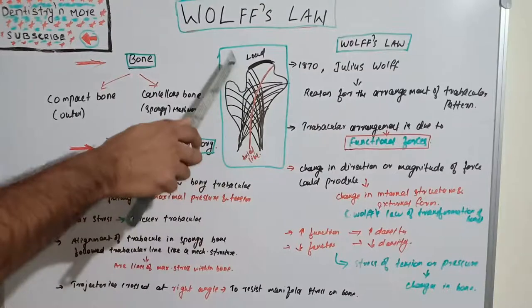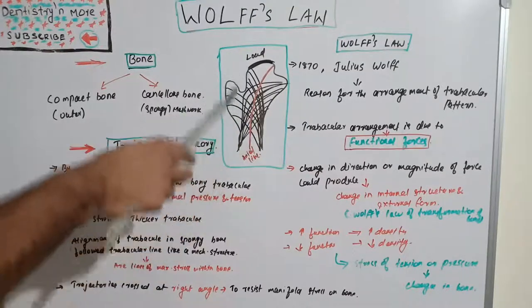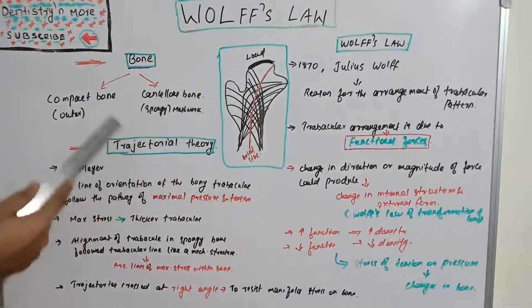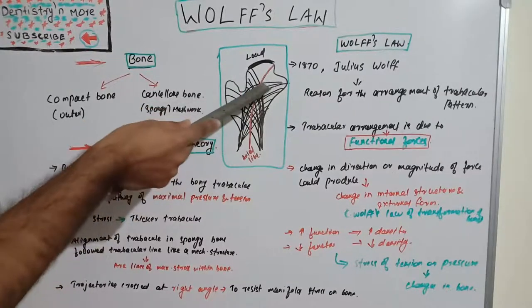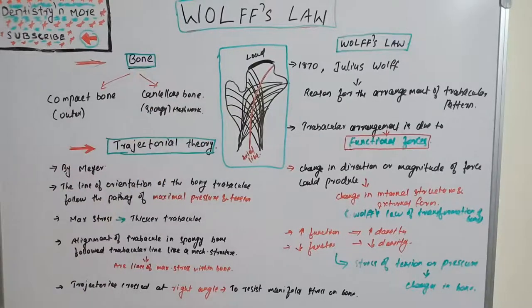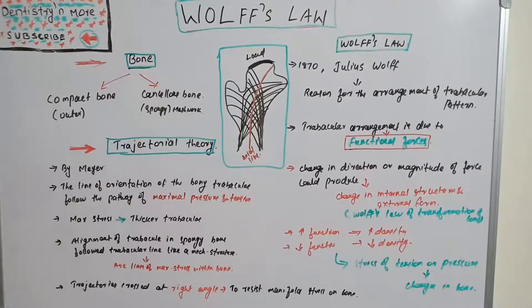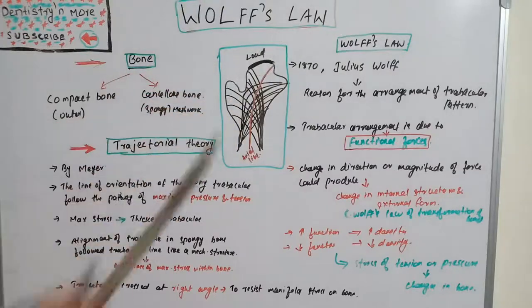These trabecular lines are lines of maximal stress within the bone. These trajectories cross each other at right angles — 90 degrees — to resist the manifold stress on the bone. That is what trajectorial theory says: the line of orientation follows the maximum pressure and tension, these are the lines of maximal stress within the bone, and this alignment follows maximum stress just like a mechanical structure.